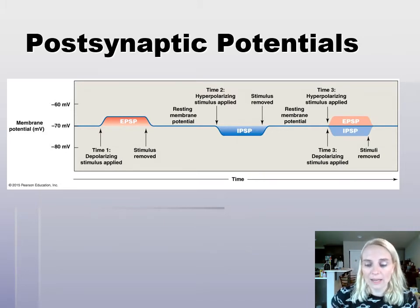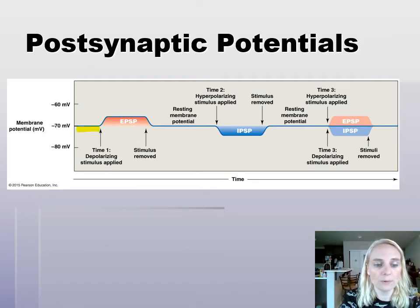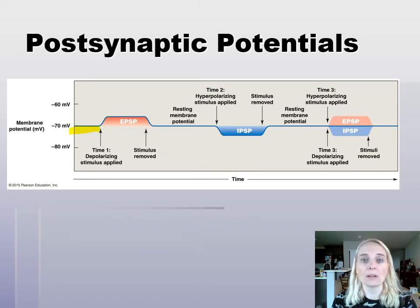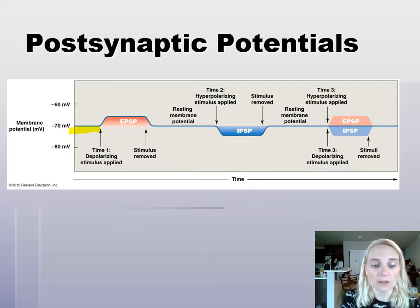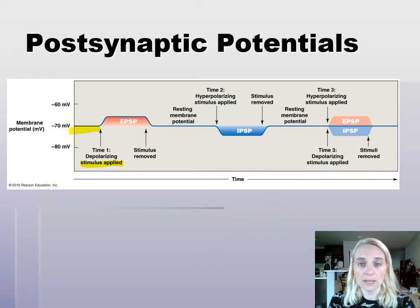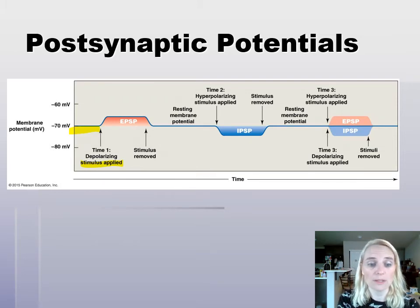So let's say we're hanging out at rest. We get a stimulus for a graded potential — this is the arrival of a neurotransmitter. Here is our stimulus applied. In this case it's excitatory, so maybe it's acetylcholine or a neurotransmitter that opens sodium channels, allowing sodium to rush in. We know that when sodium enters a cell, we're gaining positive charges.